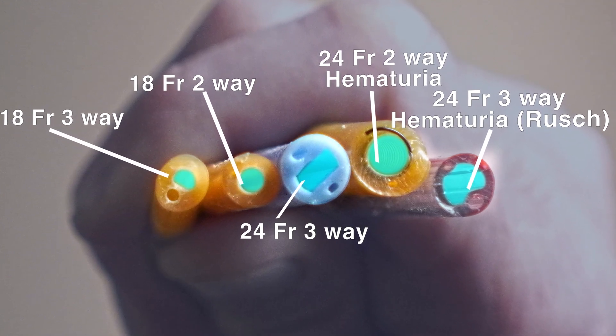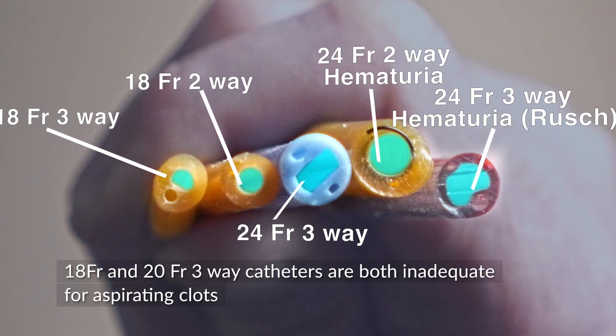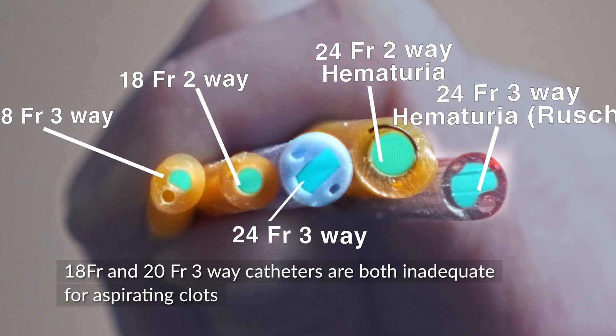Do not ever use an 18 French three-way catheter for continuous bladder irrigation. Again, this catheter is completely worthless. All right, that's all we had for the video today. Thanks so much for watching. If you have any questions, please put comments below or subscribe to our channel.